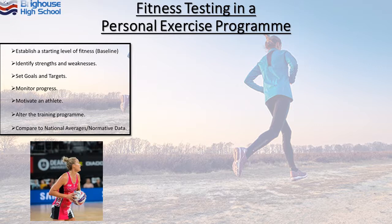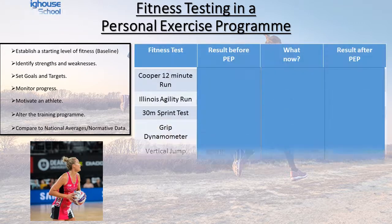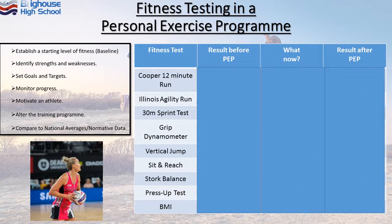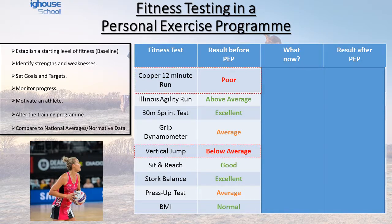We've talked about why people would fitness test, but let's look at how this would work in a personal exercise programme, which is something you will do as part of your coursework at the end of year 10. Take this netballer, for example — she will carry out fitness tests for all of the above reasons. Having carried out all the fitness tests, her results compared to normative data show that the Cooper 12 minute run and the vertical jump were either below average or poor, indicating that her cardiovascular endurance and lower leg power were not at the correct level.